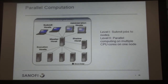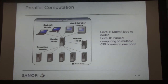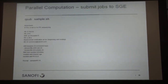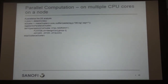For large-scale computation, we use the SunGrid Engine cluster. From each laptop you can log in to the master host and submit jobs to execution hosts. There are two levels of parallel computing: submitting jobs to multiple nodes, and within each node using multiple CPU cores. We have scripts for SGE job submission and code for using multiple CPUs on a single node.